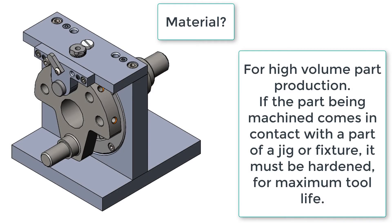In this video we want to examine what material the parts of our jig or fixture should be made from. The first rule is, is this a high volume part? If it is, everything our part that's being machined comes in contact with or touches must be hardened for maximum tool life.